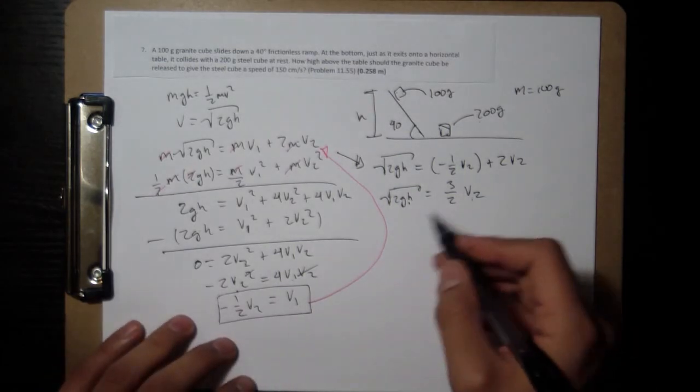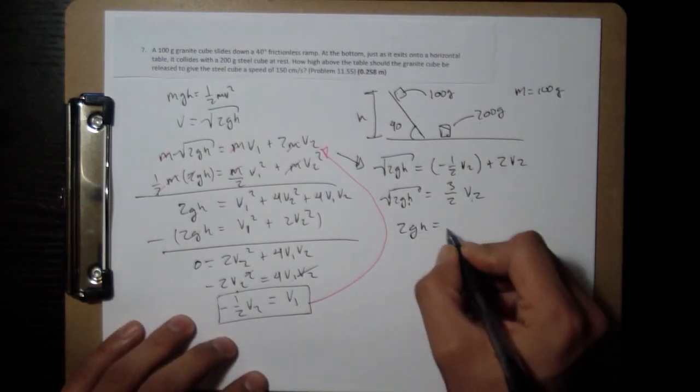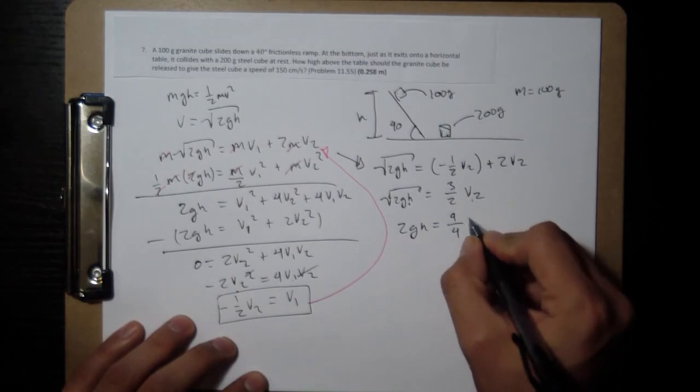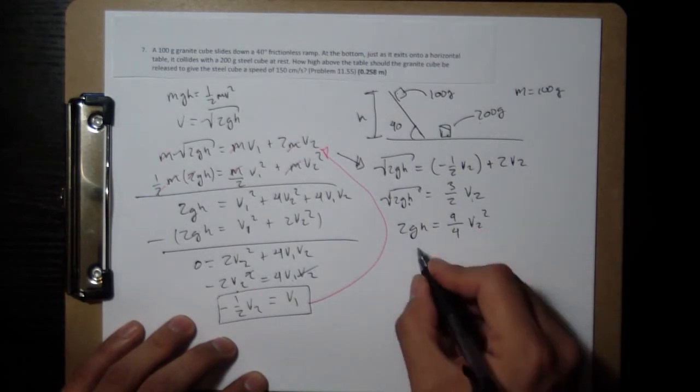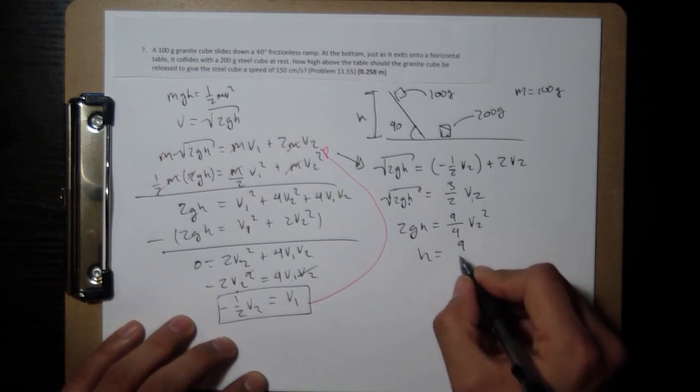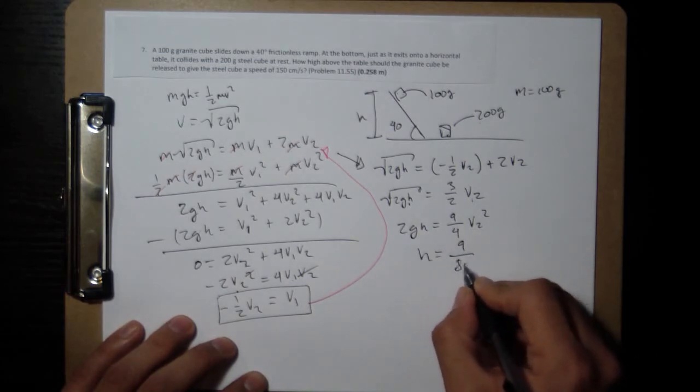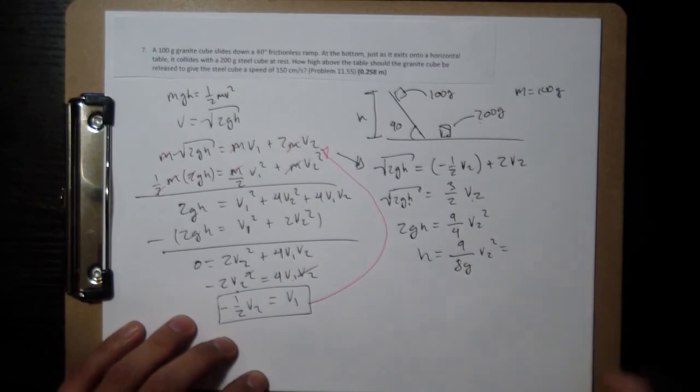2gh equals 9 fourths v2 squared. 2 is going to come down. g is going to come down. h is going to be 9 over 8g v2 squared. Let's put some numbers to it.